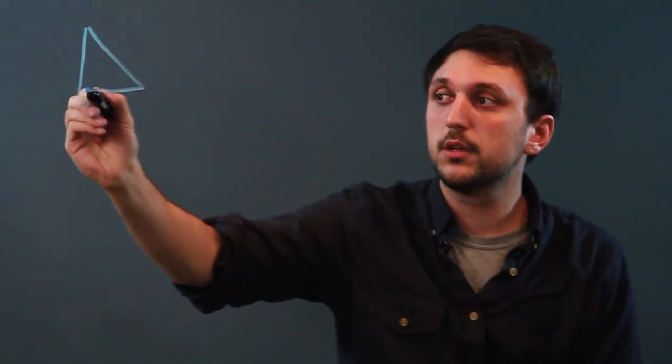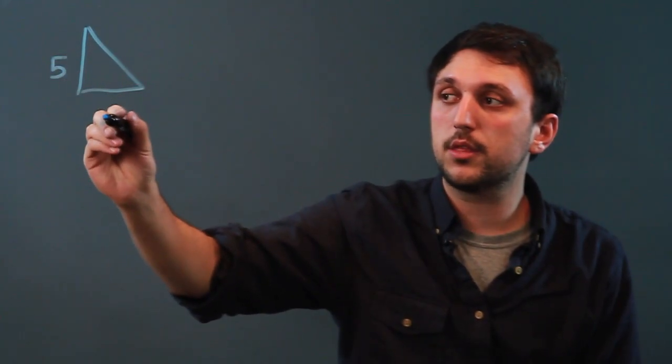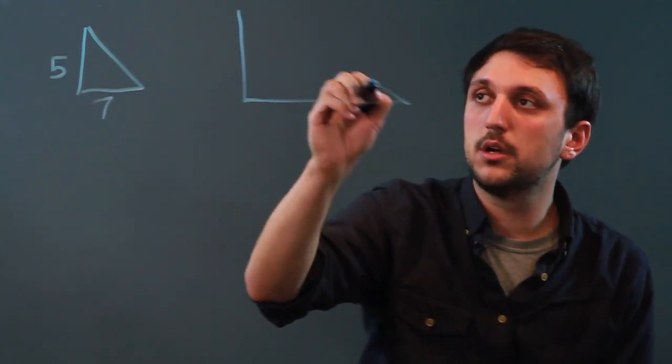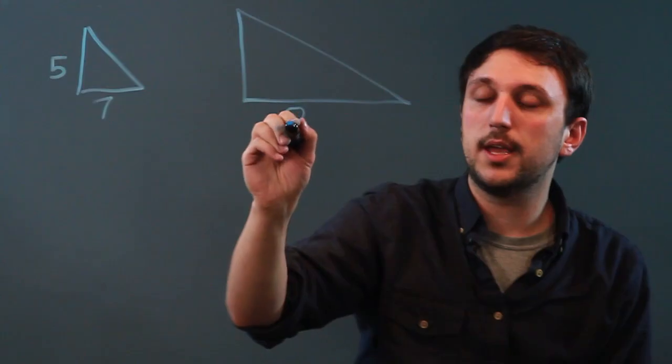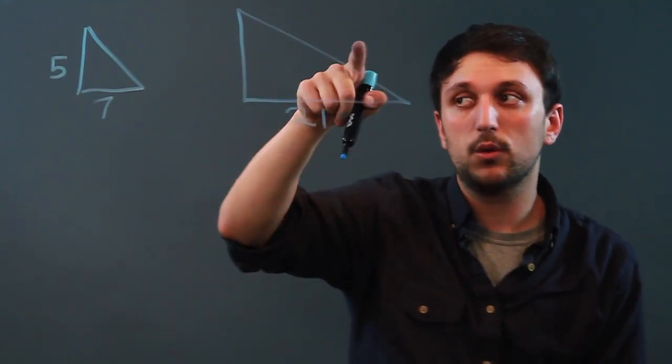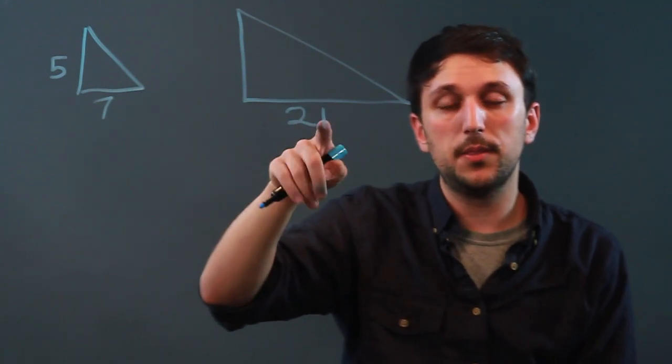Let's draw some triangles. Here's a triangle with a height of 5 and a length of 7. Then here is a triangle with a base of 21. It doesn't matter what the height or hypotenuse is, because all we need is one of the lengths—the base.